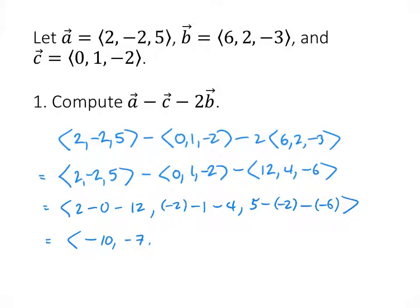And 5 minus minus 2 is 5 plus 2, that's 7. Minus minus 6, that's 7 plus 6, which is 13. So our solution is (-10, -7, 13).